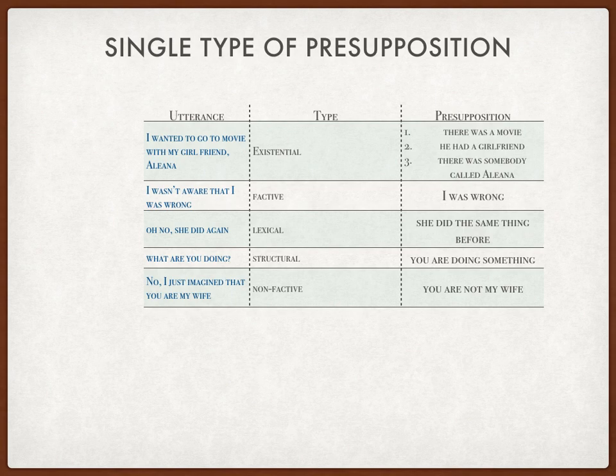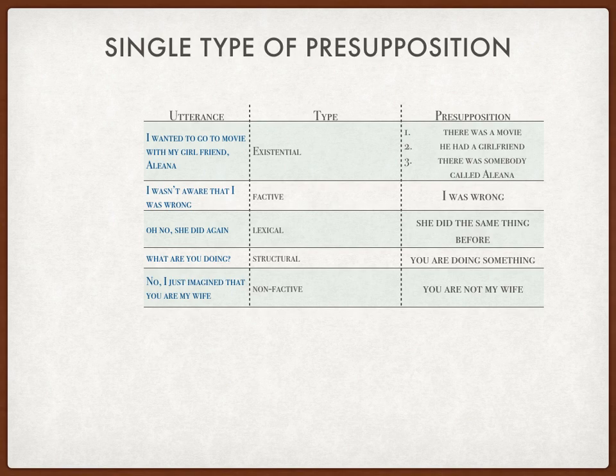The fifth sentence is: 'I just imagined that you are my wife.' This represents non-factive presupposition, since there is the word 'imagine,' which means the remaining information must be just imagination — it is non-factive. Similarly, words like 'dreamt' or 'dream' work the same way; the rest of the information must be non-factive.